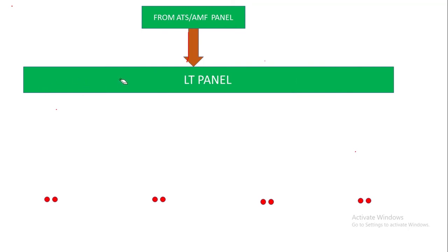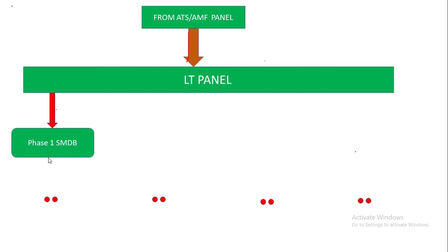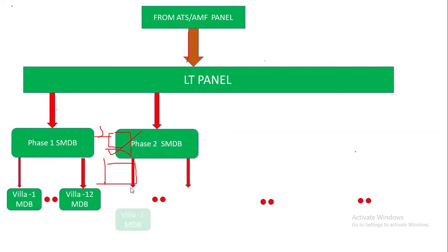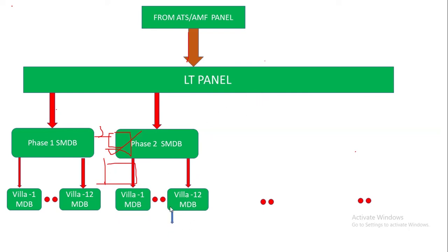Inside the LT panel we have separate MCCBs, or ACBs for major loads. From the LT panel it goes to the phase one SMDB. From the phase one SMDB, power is distributed to each villa — say villa 1 MDB to villa 12 MDB — with a separate MCB for each villa, using a four-pole MCB for three phase and one neutral. Similarly for phase two SMDB, power feeds to villa 1 through villa 12 of phase two.